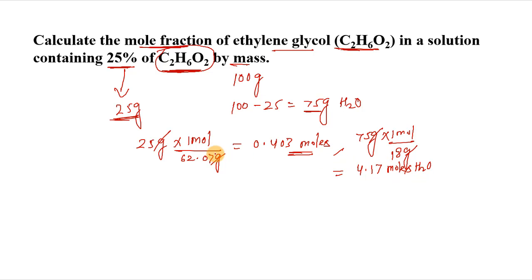Now we have the required data and can apply the mole fraction formula for ethylene glycol. Here we have mole fraction, symbol X, with chemical formula C2H6O2 equals moles of ethylene glycol.